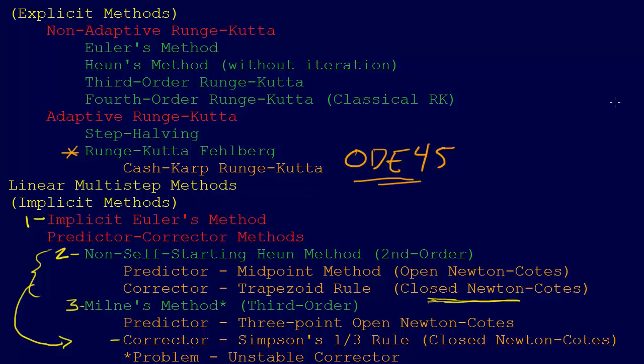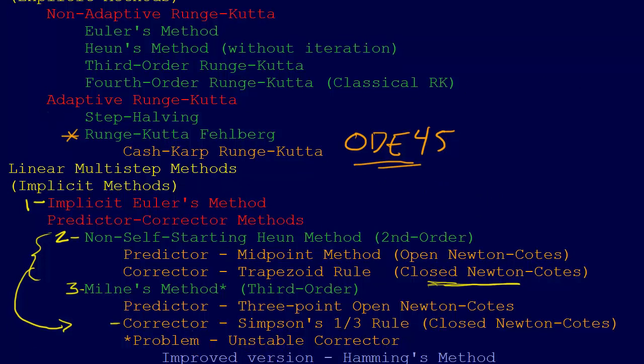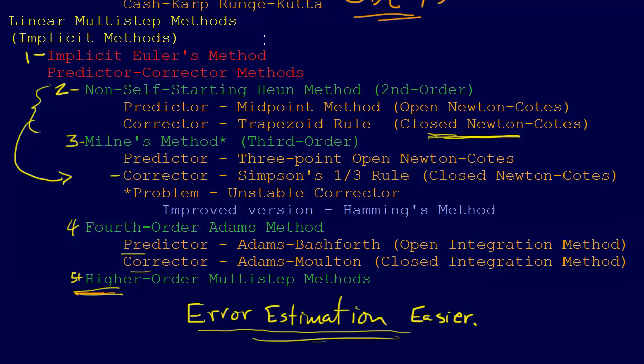So what I should do then is try one of these stiff solvers, and the stiff solvers are going to use these linear multi-step methods. Your go-to method will be something similar to a good robust method like Hamming's method or fourth-order Adams method, that will do this predictor-corrector and deal with stiff systems.